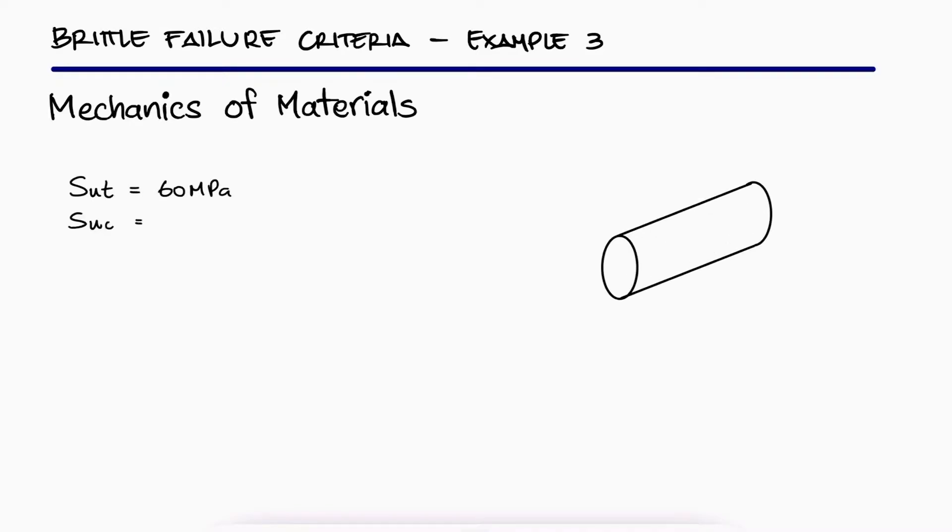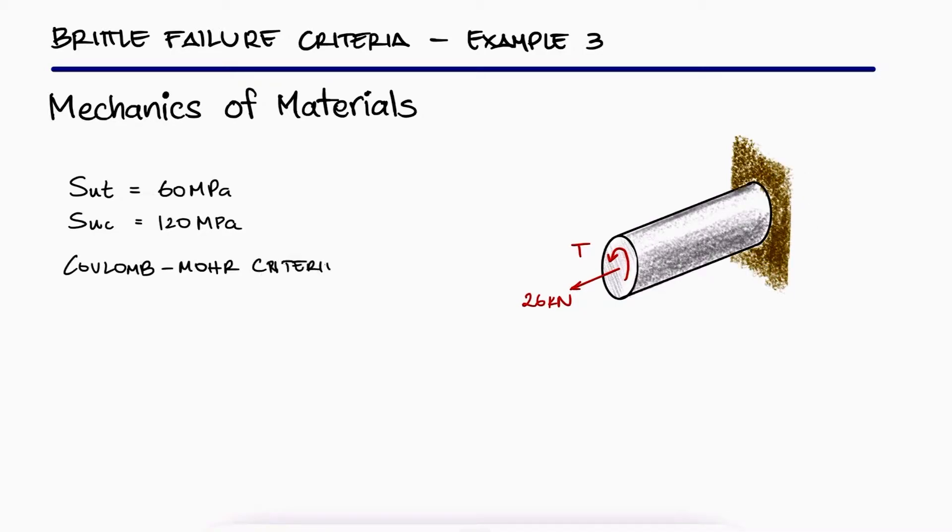The cast aluminum rod shown is made of an alloy for which the ultimate tensile strength is 60 MPa and the ultimate compressive strength is 120 MPa. Using the Coulomb-Moore criterion, determine the magnitude of the torque T for which failure should be expected.